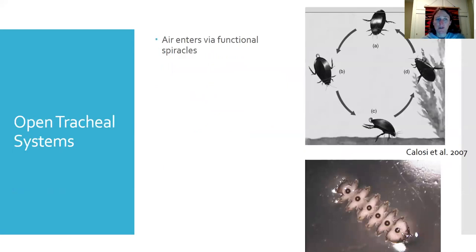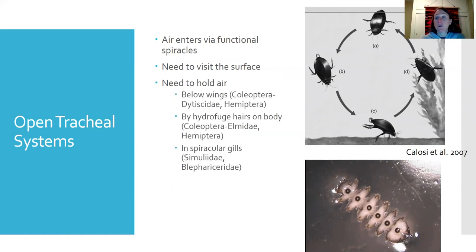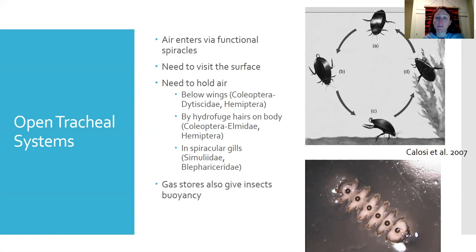In open tracheal systems, air enters the body via functional spiracles. Some organisms need to visit the surface to get a bubble — like the dytiscid beetle shown on the right — and then hold on to that air. Some organisms hold bubbles below their wings, like dytiscid beetles and some hemipterans. Others hold bubbles using hydrofuge hairs on their bodies, like elmid riffle beetles and other hemipterans. Some organisms use spiracular gills — gills connected to the spiracle — for instance, blepharoceridae fly larvae. These gas stores also provide extra buoyancy, which is helpful because many insects with hard exoskeletons are negatively buoyant.